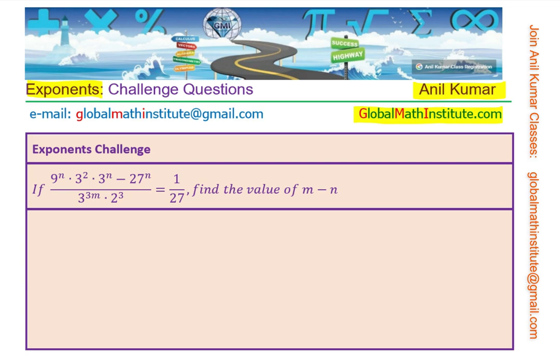We notice that most of the terms can be written in terms of 3. In this particular case, 9 is 3 squared and 27 is equal to 3 cubed, so that can help us to simplify.